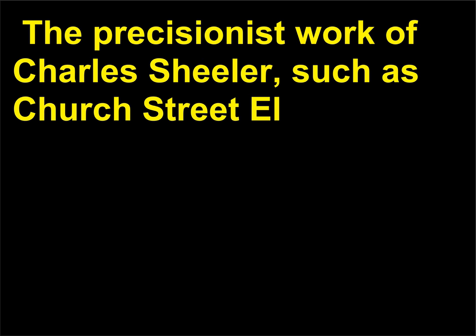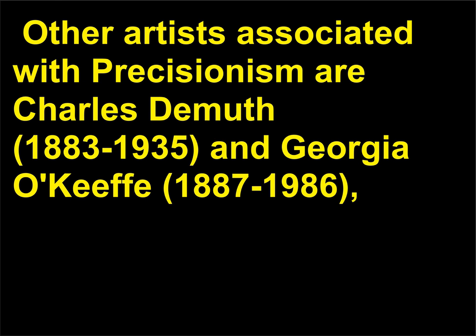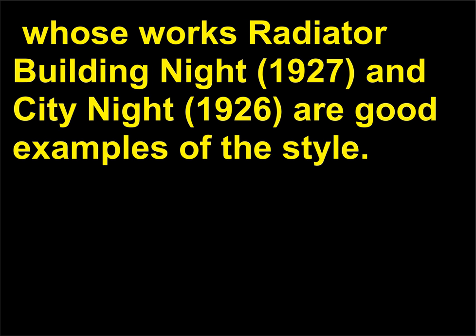The precisionist work of Charles Sheeler, such as Church Street L (1920), is clearly influenced by the artist's experience as a photographer and emphasizes the man-made world. Other artists associated with precisionism are Charles DeMuth (1883–1935) and Georgia O'Keeffe (1887–1986), whose works Radiator Building Knight (1927) and City Knight (1926) are good examples of the style.